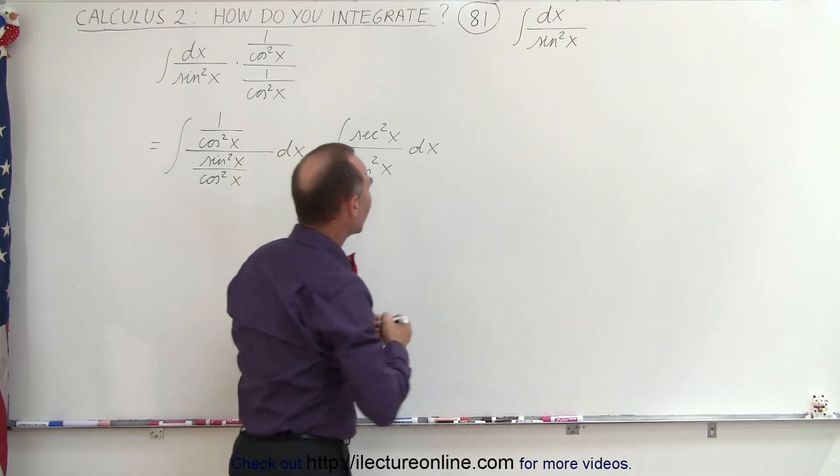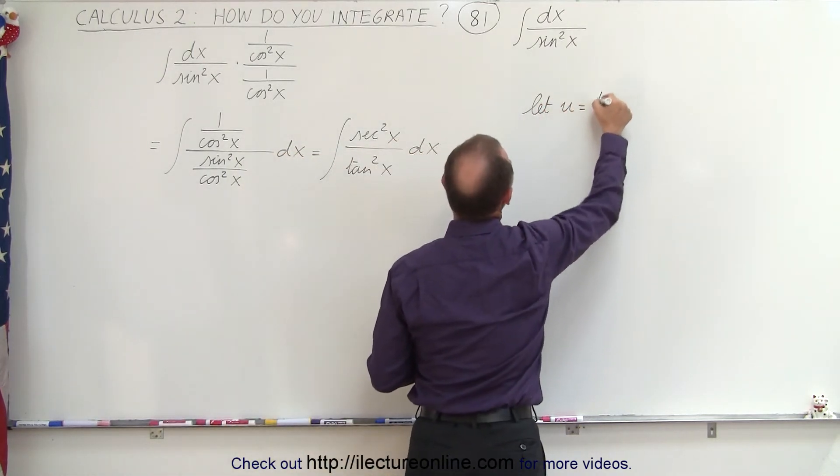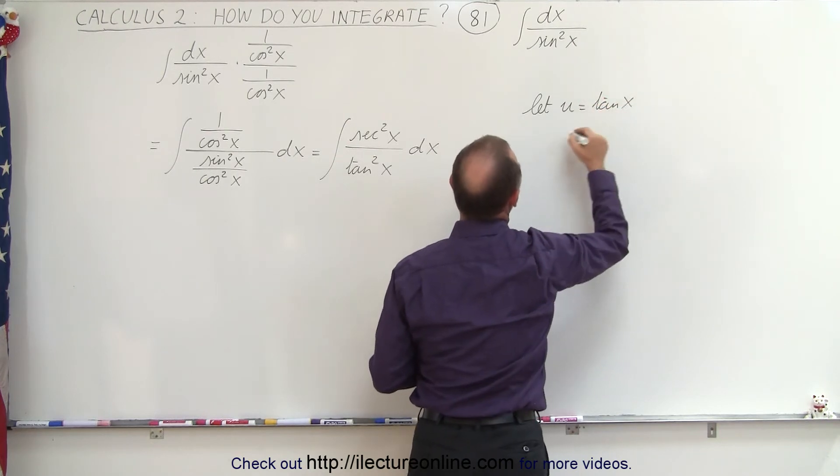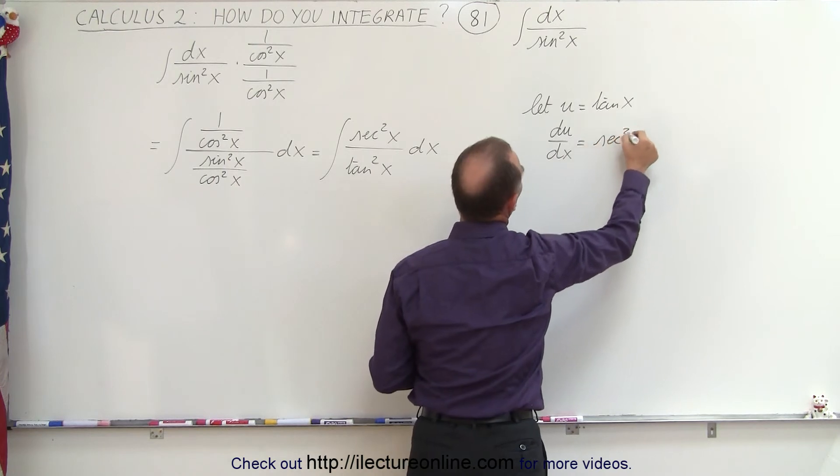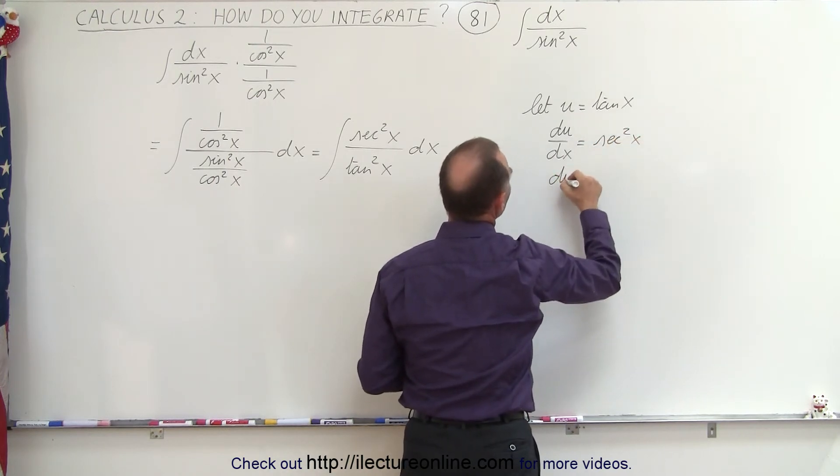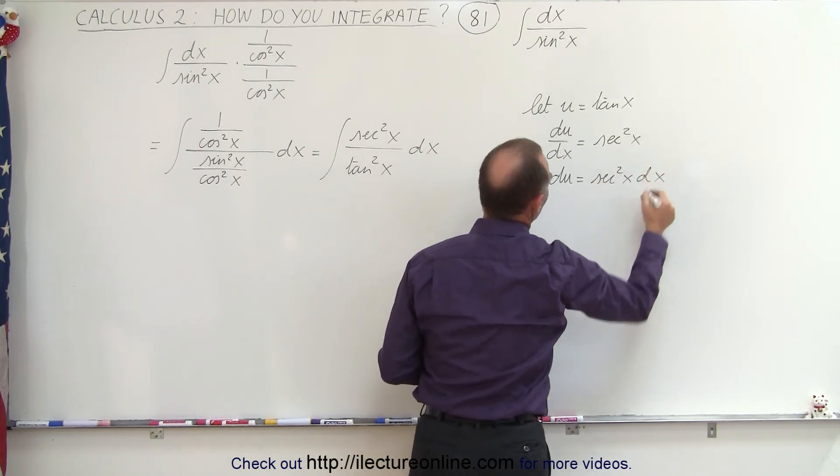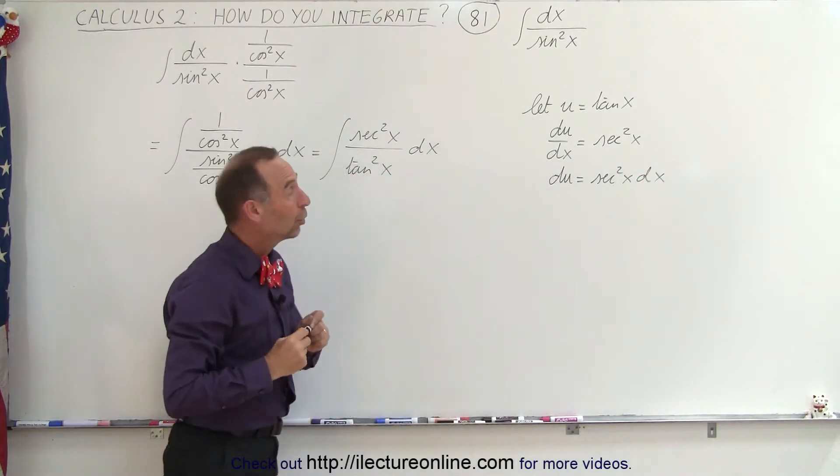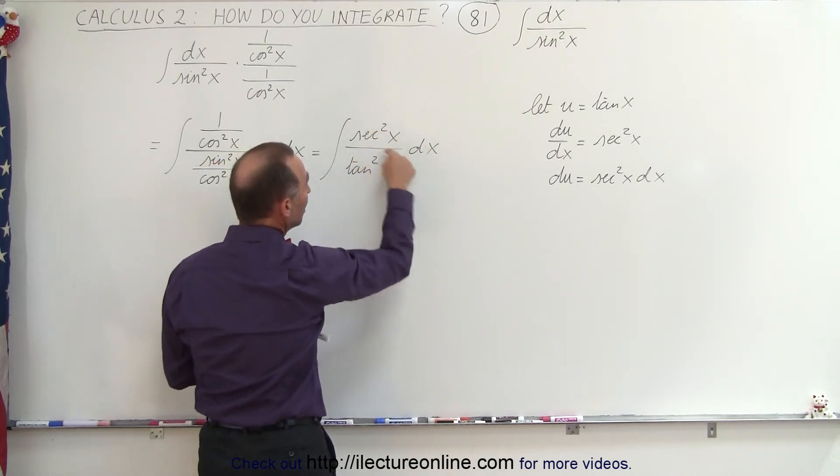then you might realize that if you let u equal the tangent of x, then du/dx, the derivative of that, will be equal to the secant squared of x, which means that du is equal to the secant squared of x times dx. And let's take a look at our numerator. The numerator has the secant squared of x dx, which is du.